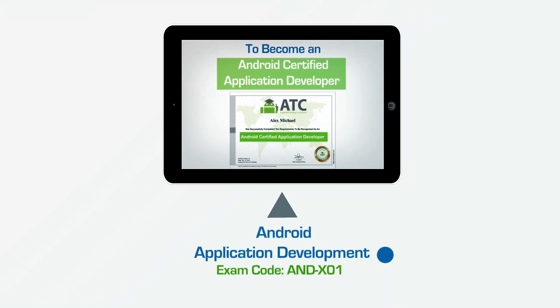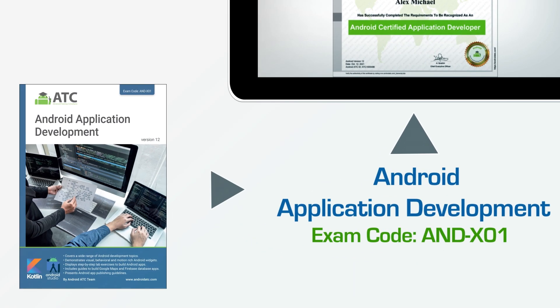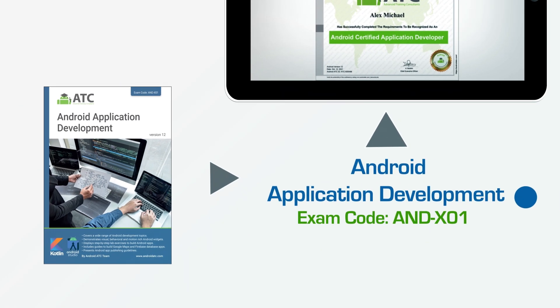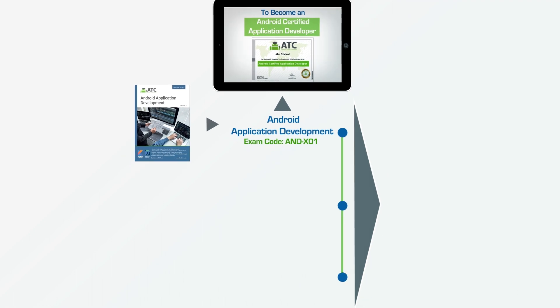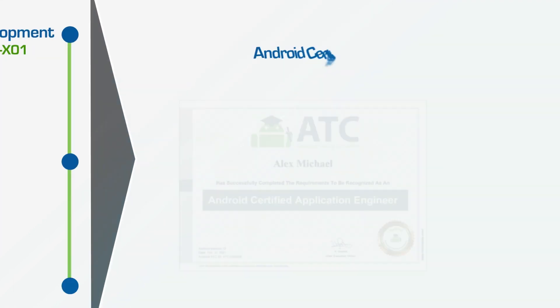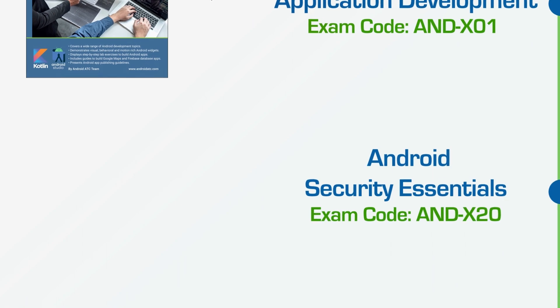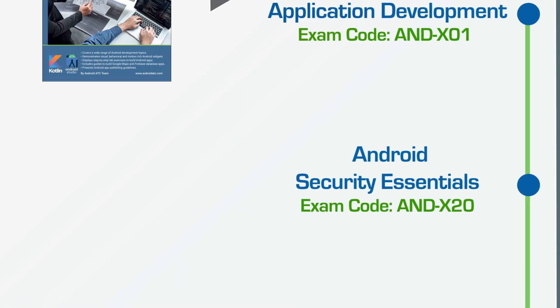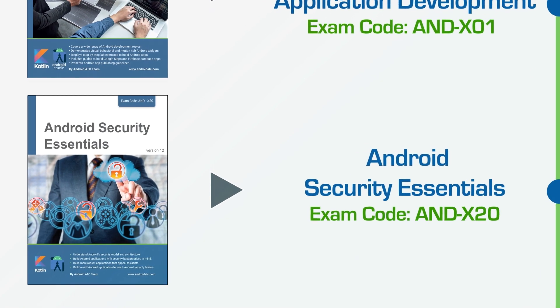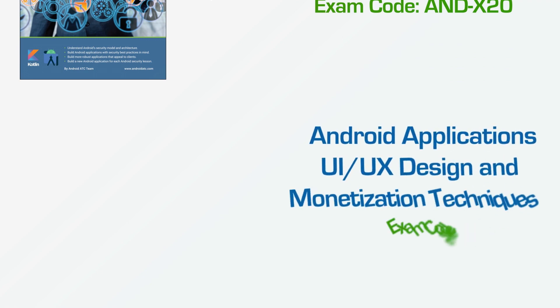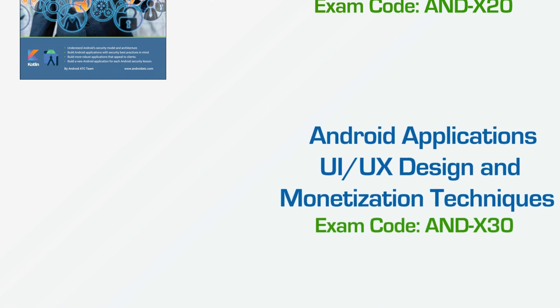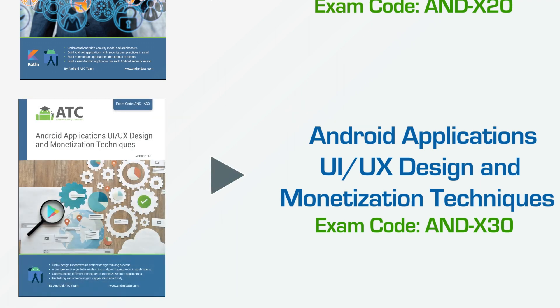To become an Android Certified Application Developer, you must pass the exam which relies on the Android Application Development course. To complete the certification path and become an Android Certified Application Engineer, you must pass the Android Security Essentials exam and the Android Applications UI/UX Design and Monetization Techniques exam, which relies on the Android UI/UX Design and Monetization Techniques course.